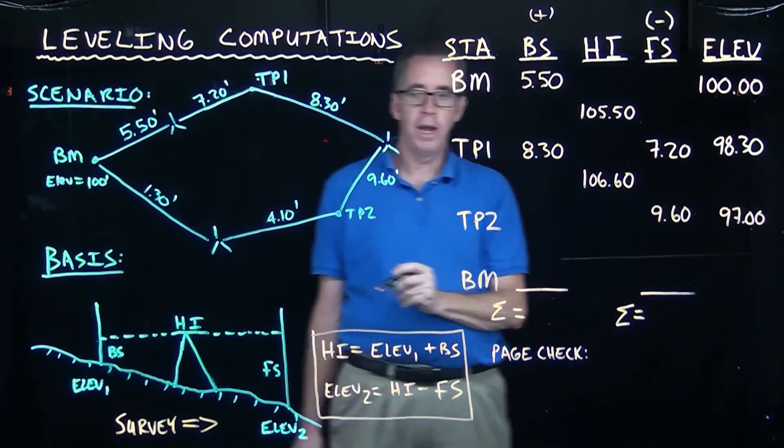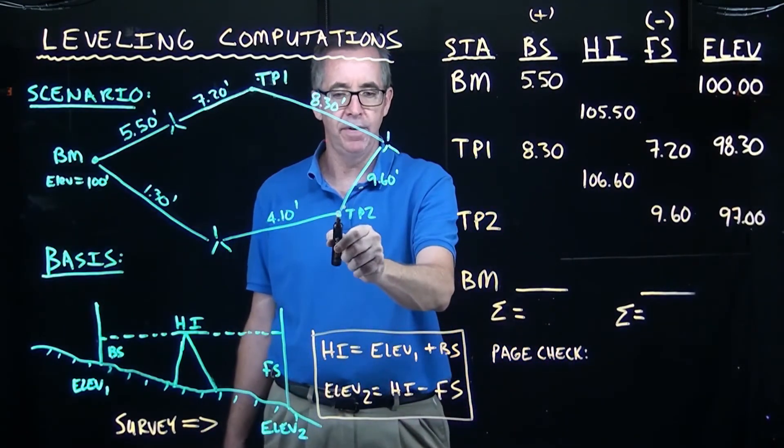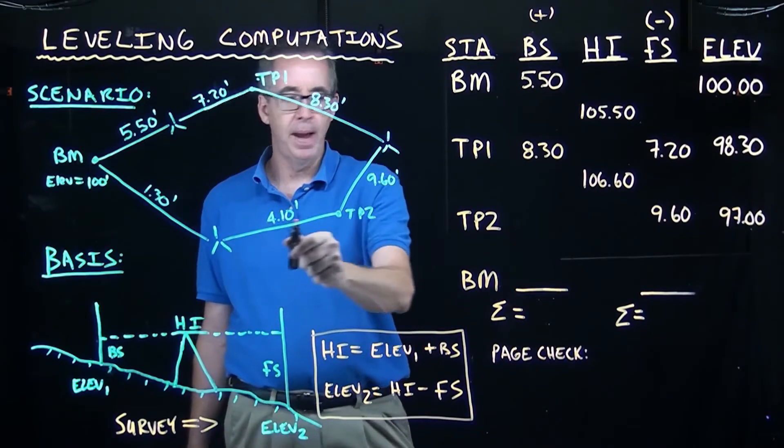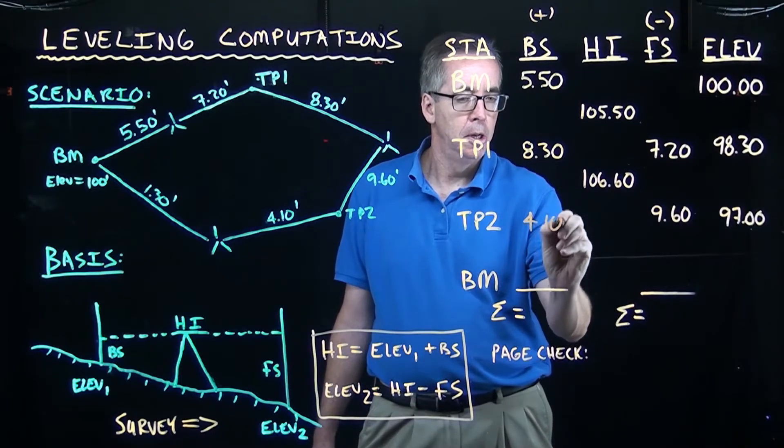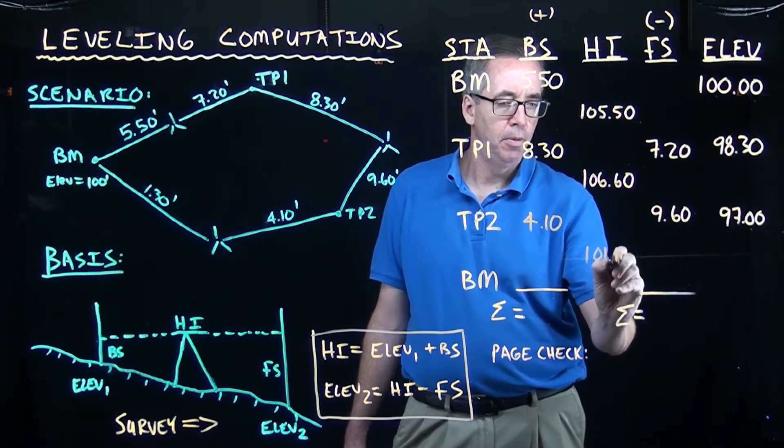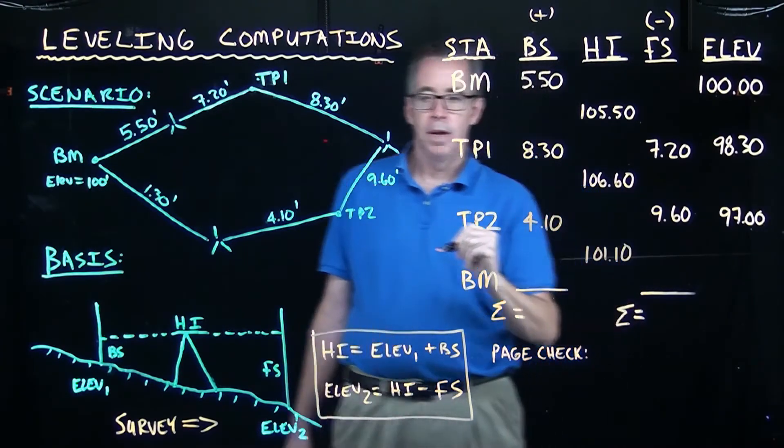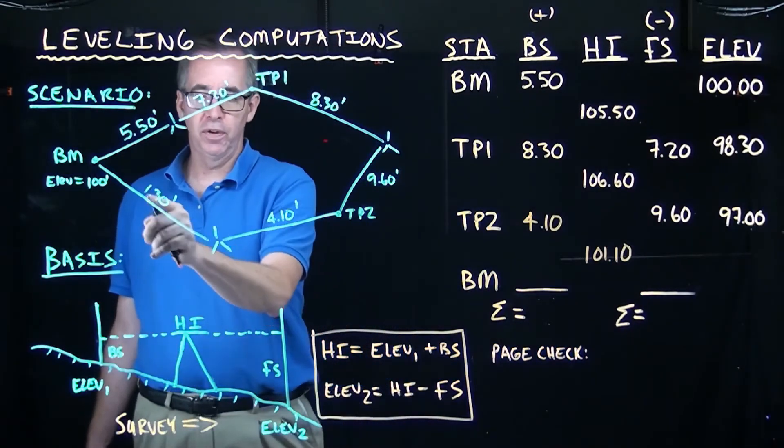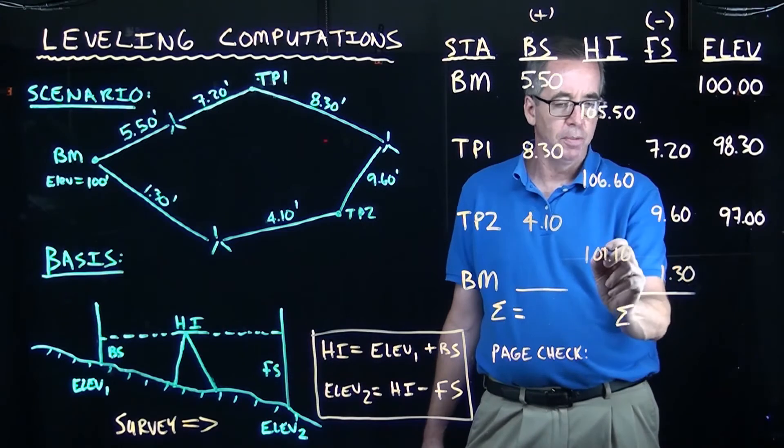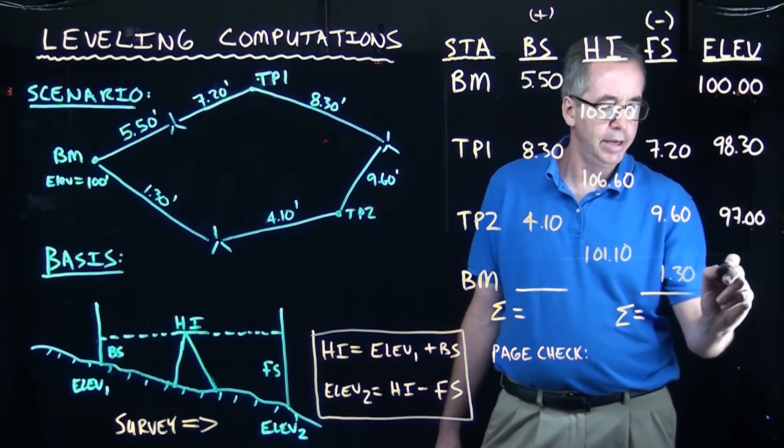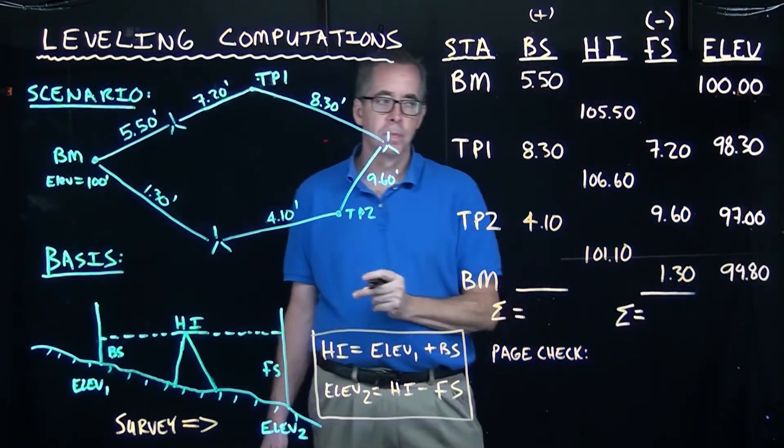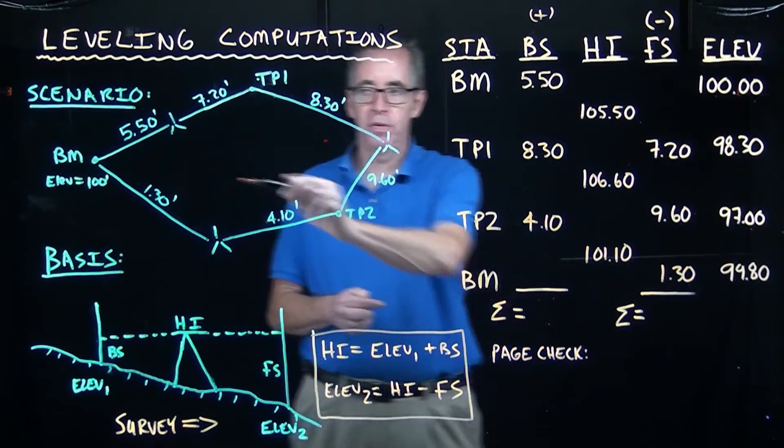So the elevation of turning point 2 is 97. It's a turning point, the Philadelphia rod stays put. We pick up our tripod, move it somewhere between that turning point and the benchmark. Once it's level, we do a backside of 4.1. When I take 97 and I add 4.1, I get a new height of instrument of 101.10. And then to close the survey and close the loop, I do a foresight and I get 1.3. So right here, I have a reading of 1.30. When I subtract 1.30 from 101.10, I get 99.80.